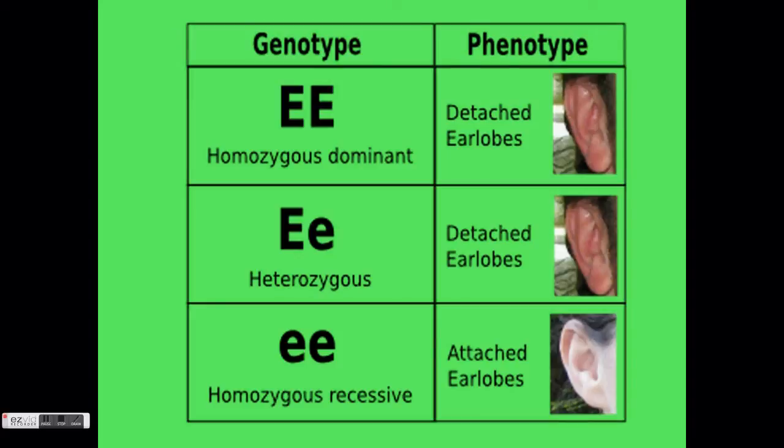If a person has one dominant and one recessive allele, it is called heterozygous. It is written with one capital letter and one lowercase letter. If a person has two recessive alleles, it is called homozygous recessive. It is written with two lowercase letters.